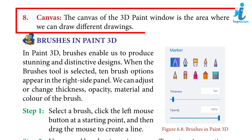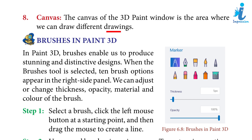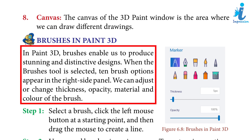Eight: Canvas — the canvas of the Paint 3D window is the area where we can draw different drawings. Nine/Ten: Brushes in Paint 3D — brushes enable us to produce stunning and distinctive designs. When the brush tool is selected, brush options appear in the right side panel. We can adjust or change the thickness, opacity, material, and color of the brush.